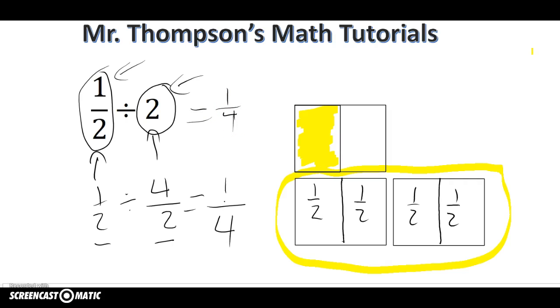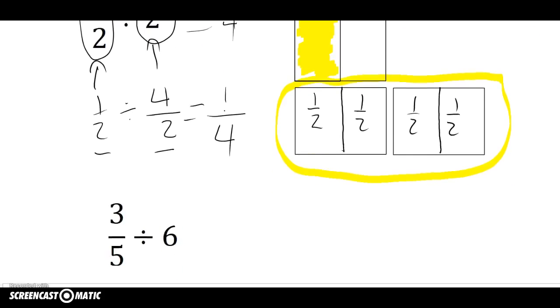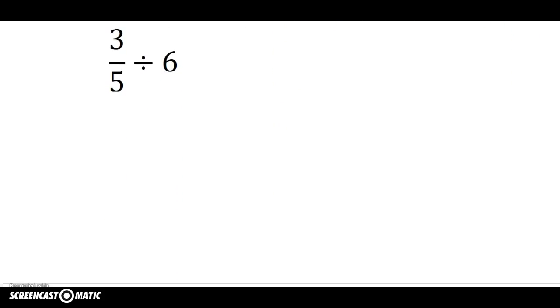Let's look at a different example. Let's say I'm looking at three-fifths divided by six. So again, I'm asking how many groups of six are in three over five. And I can tell that there's not going to be a full group, but there's going to be a part of a group, and let's see how much that would actually be.